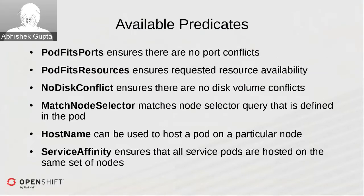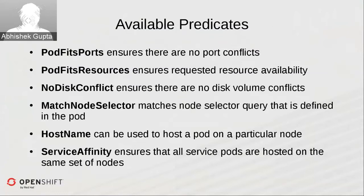Looking at the available predicate functions that come out of the box with OpenShift: the first is pod fits ports, which ensures that if you require a host port in your pod, we will not schedule multiple pods that require the same port on the host. You can specify any port within the pod itself, but if you require that port to be mapped onto the host, we make sure multiple pods don't conflict on port requirements.